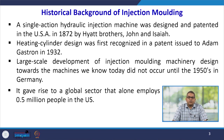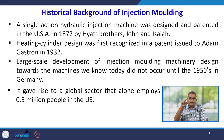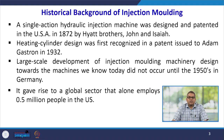Injection moulding was first designed and patented in the USA in 1872 by the Hyatt Brothers. This heating cylinder design was first recognised in a patent issued to Adam Gastron in 1932, because the heating cylinder is an integral part — you need to melt or heat down the polymers so they can acquire a proper shape. Large-scale development of injection moulding machinery did not occur until the late 1950s in Germany, where machinery expertise was mastered.